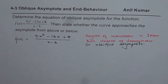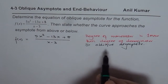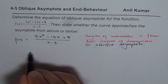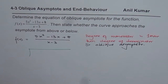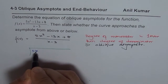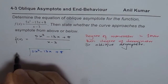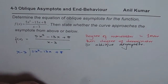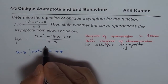When we expect an oblique asymptote, we can find its equation by dividing and finding the equation of the line which represents the oblique asymptote. We will do long division: divide 5x² minus 13x plus 8 by the denominator x minus 3.